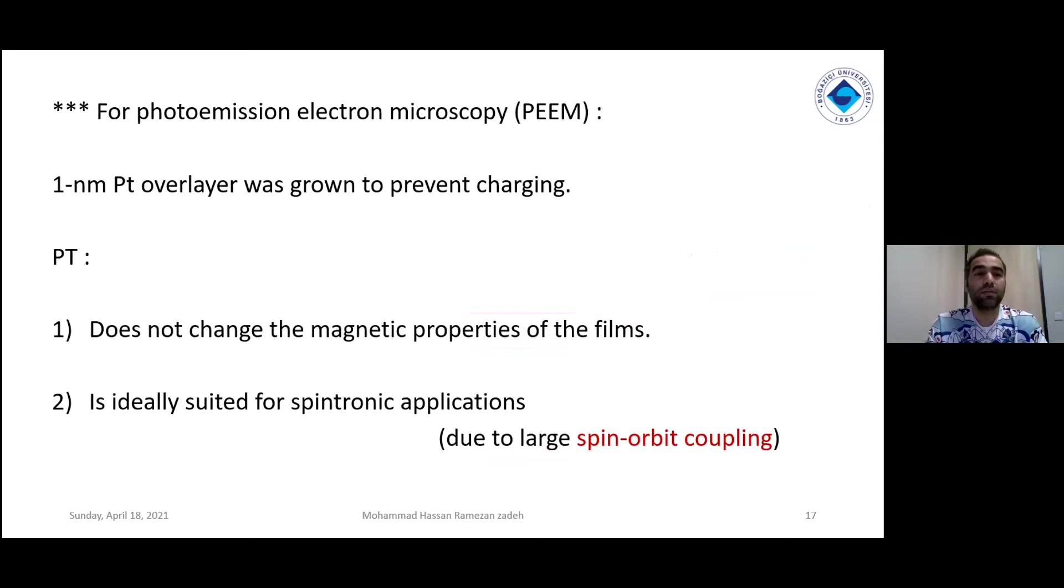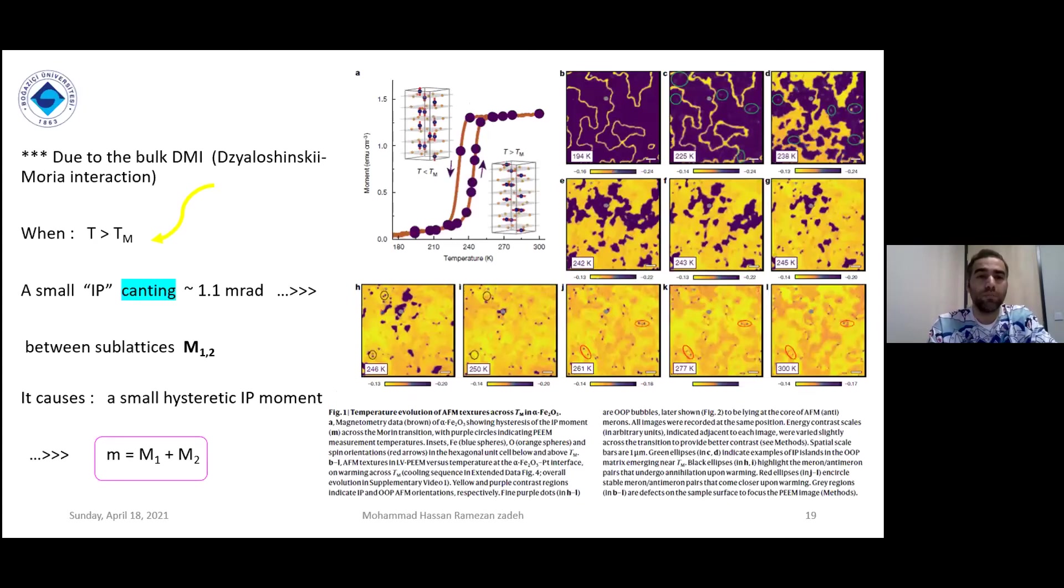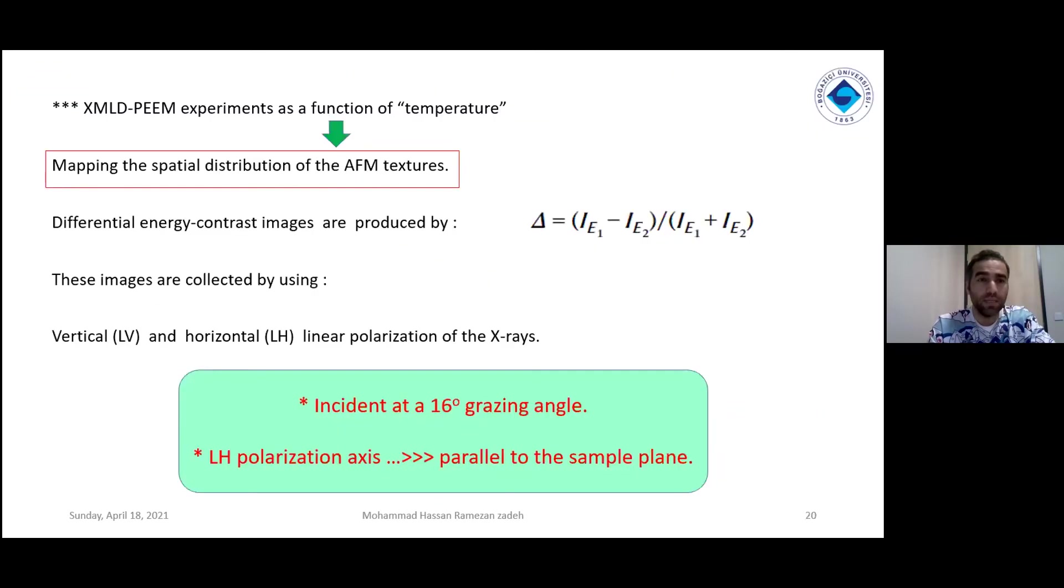PEEM technique or photo-emission electron microscopy. For this, they use 1 nanometer platinum overlayer. The platinum is good because it doesn't change the magnetic properties of the films. It is suitable for spintronic applications because spin-orbit coupling is very large. Another technique is XMLD technique or X-ray Magnetic Linear Dichroism. This technique confirms the Néel orientation across the respective Morin temperature. L means that vector and we will see if it is parallel or anti-parallel.